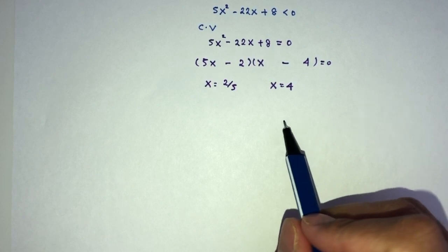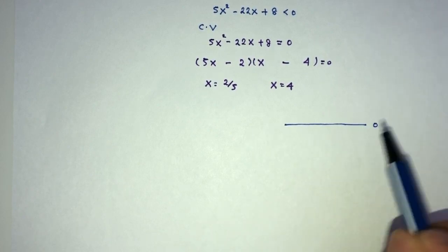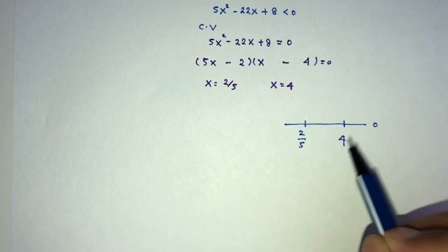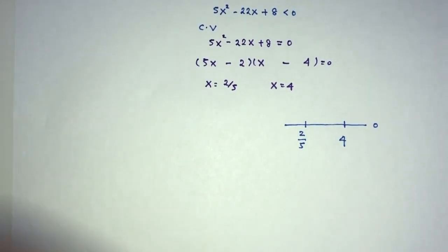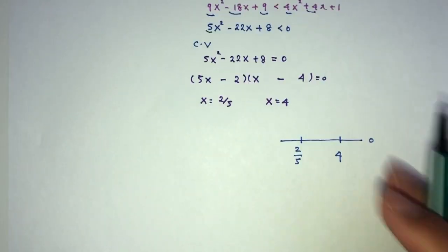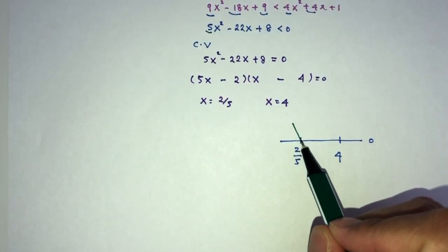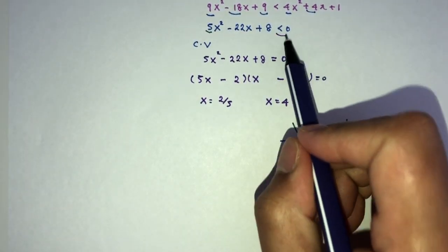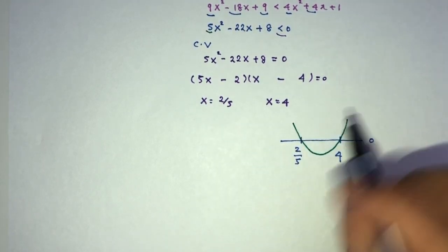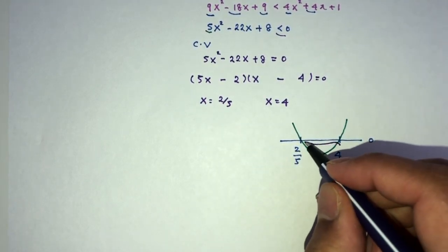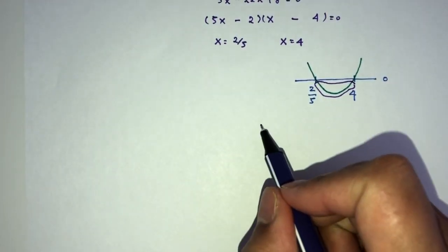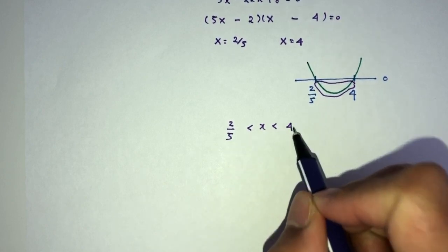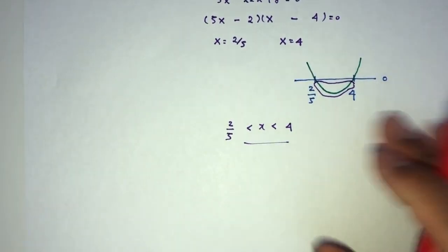Finally, using the number line, 0 here, and this is the value of 2 over 5, and this is the value of 4. By observing the coefficient of x², it is positive. We know it will have to have a minimum shape. Now, we want this to be below 0, so below will be below. You'll have only these values right here. Hence, x will have to lie between this one and this one. And this is your answer for question number 1.